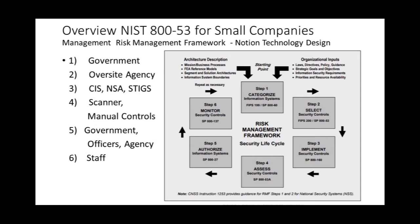Step one is categorizing your controls. If you look at the slide at the top right, they talk about laws, directives, policies and guidance, goals and operations. But usually the oversight agency will categorize the system because you're doing business with them. For example, if you're doing business with a radar company for the FAA for flight, that would be a high-level system — basically life or death. If that system goes down, someone can actually die. So that oversight agency will help you with step one in categorizing your system.